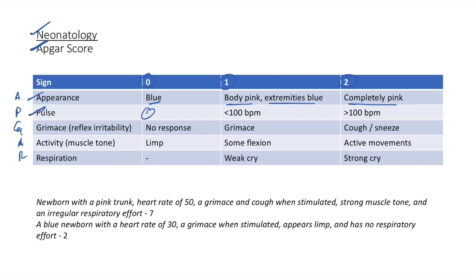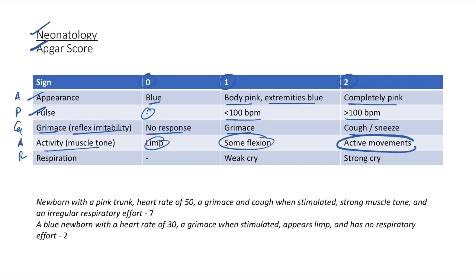APGAR continued: A = activity/muscle tone (limp=0, some flexion=1, active movements=2), R = respiration (absent=0, weak cry=1, strong cry=2). Clinical example: newborn with pink trunk, heart rate 50, grimace when stimulated, strong muscle tone, and irregular respiratory effort — total score of 7. If APGAR ≥7, only routine care is necessary.